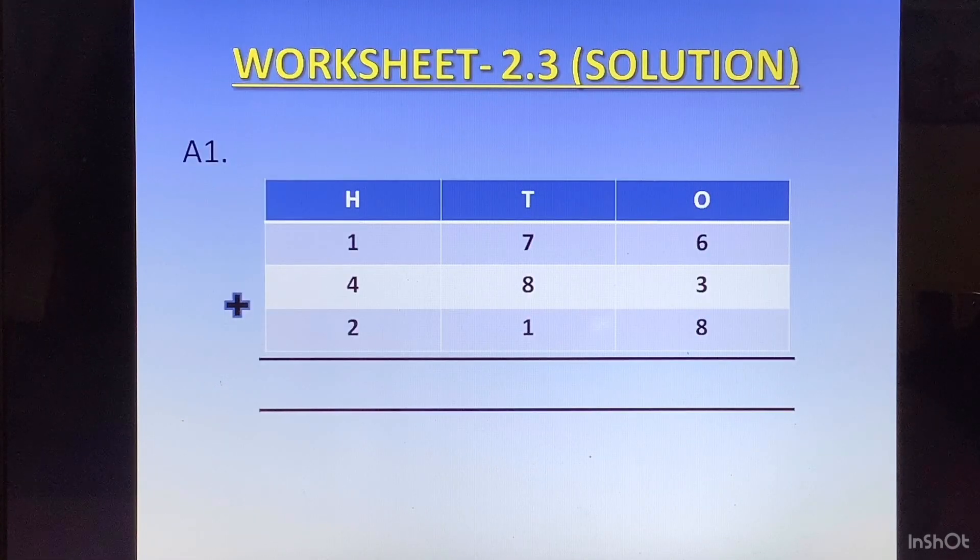Question 1. 176 plus 483 plus 218. Here we'll start adding from the ones column. We have 6 plus 3 which is 9, plus 8 is 17. So we will put 1 at the top of tens column as carry and write 7 at the bottom of ones column.